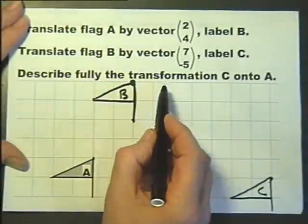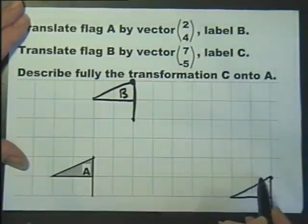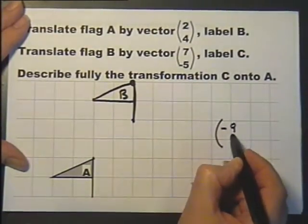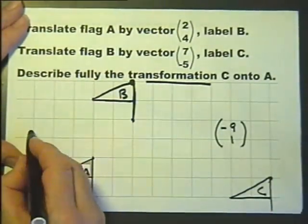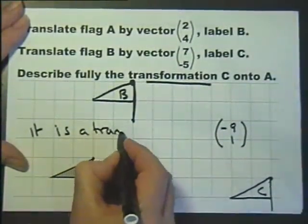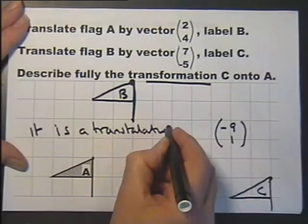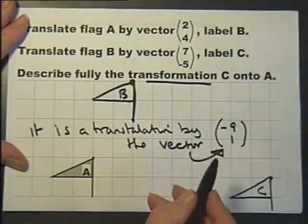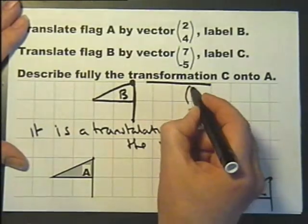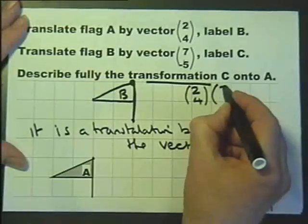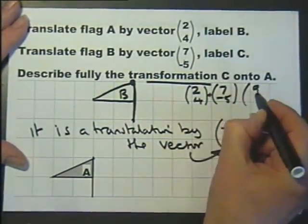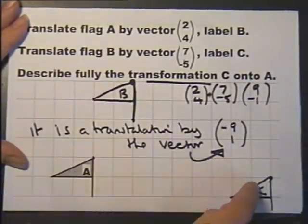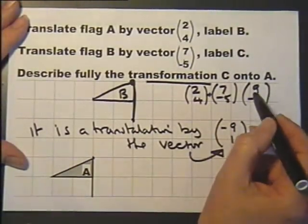Describe fully the transformation that goes from C onto A. It is a translation by the vector (-9, 1). If we look at these two vectors and add them together, we get (9, -1), which is the vector that goes straight from A to C. So the answer is the vector from C to A, which is just going the opposite way.